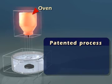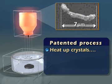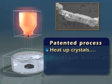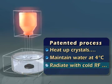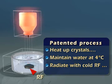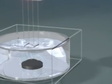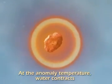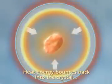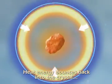To create NeoWater, an insoluble micron-sized crystal aggregate is heated and then rapidly quenched in reverse osmosis water, maintained at just below 4 degrees Celsius, while radiating it with cold radio frequency to create gas bubbles inside. Since the water is at 4 degrees Celsius — its anomaly temperature — the heat energy from the crystals is reflected back from the water. This prevents it from reaching equilibrium by a temperature gradient.